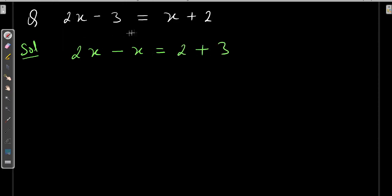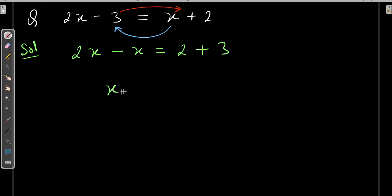So always remember, I transpose this x here and I transpose this 3 to this side. Now solve this. So variable and variable — these are like terms, so addition and subtraction is possible between them. 2x minus x is equal to x, and 2 plus 3 is equal to 5. So x equals 5 is the answer.